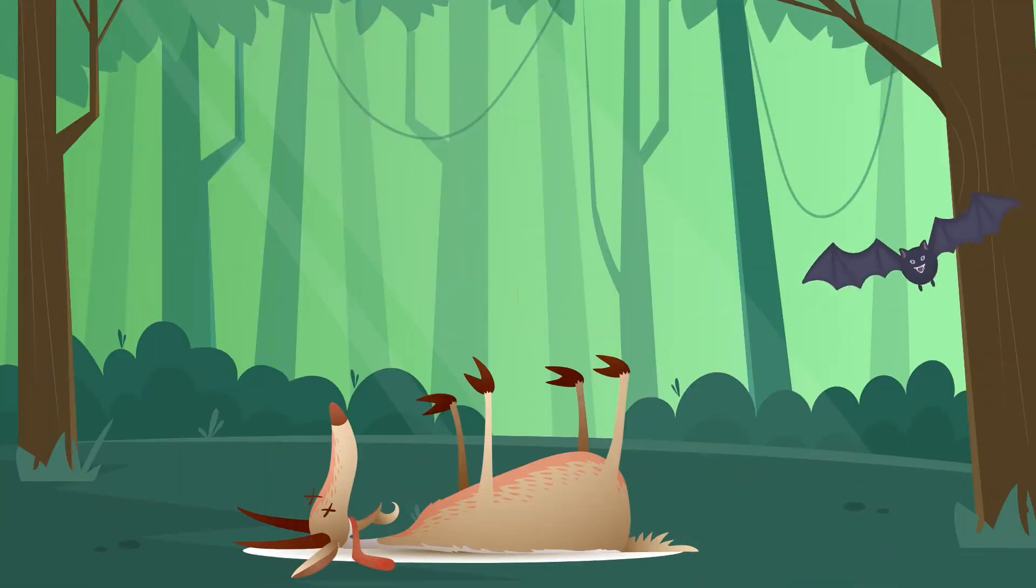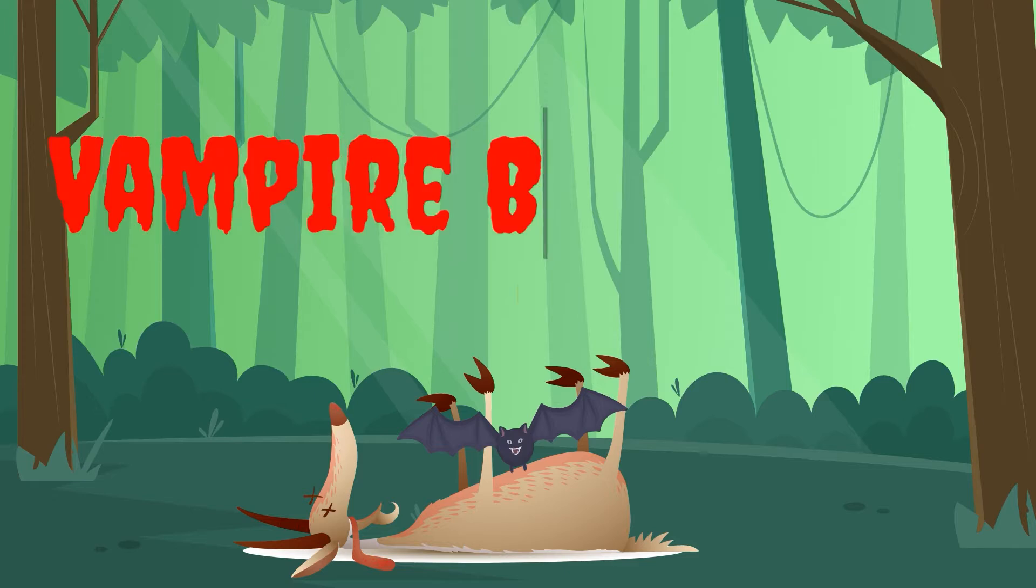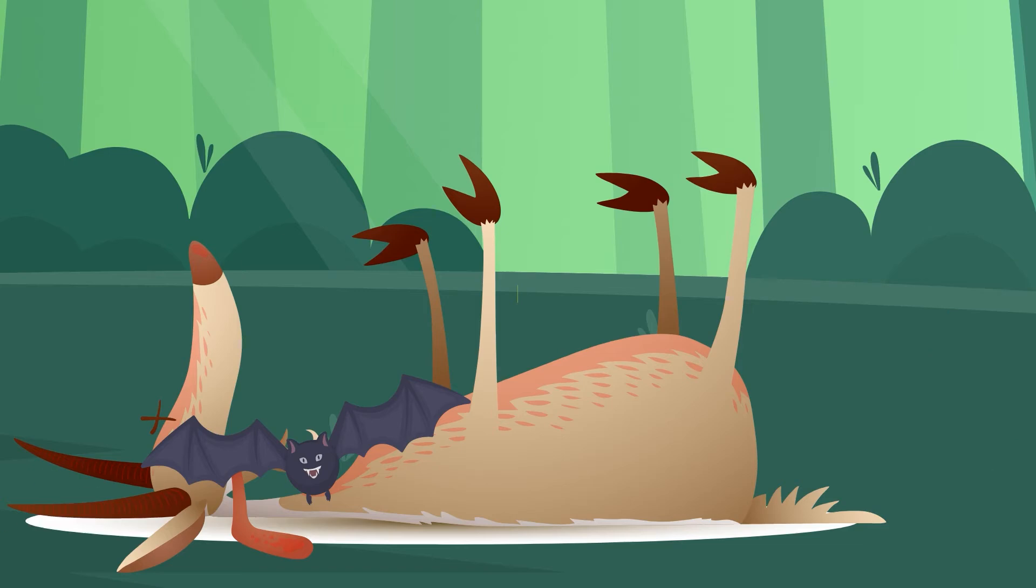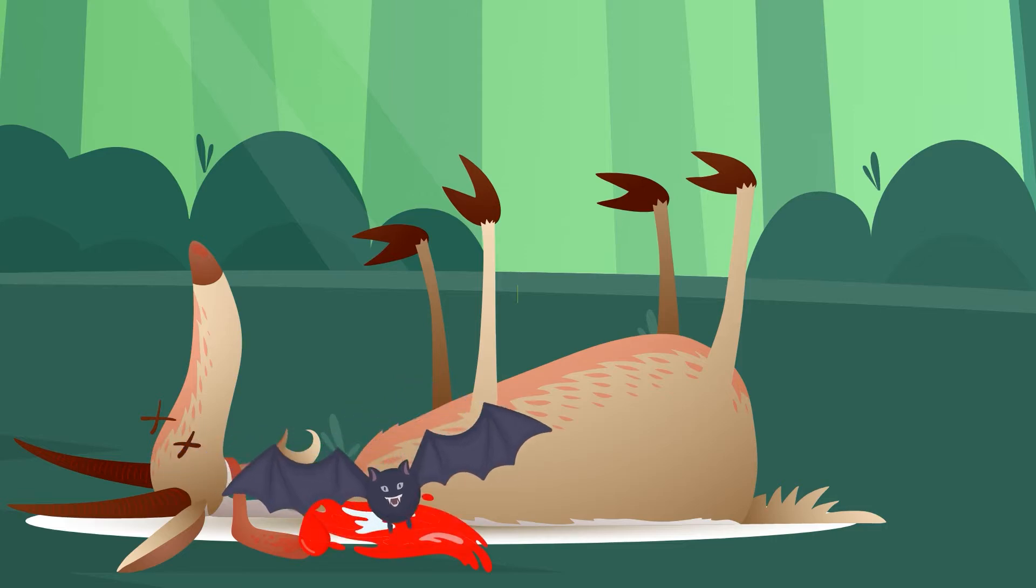There are actually bats that rely on other animals' blood for nourishment, and we do call them vampire bats. But they do not suck blood. What they do is make a small cut into an animal using their very sharp teeth. They then lap up the blood that gushes out.